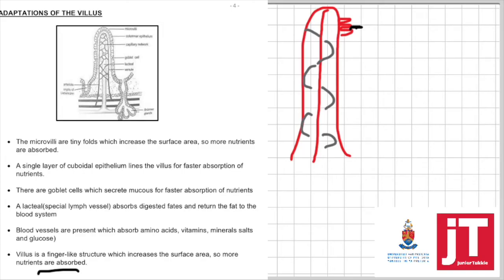On the layer of the cuboidal epithelium, there are goblet cells that secrete mucus and mucus has a lot of water as well which aids in the faster absorption of the nutrients.